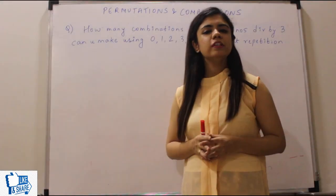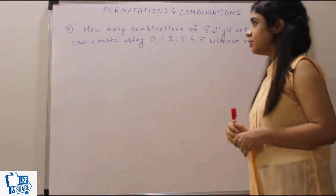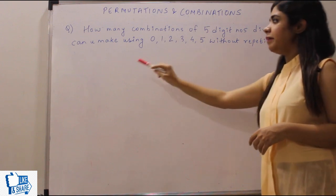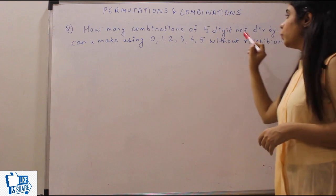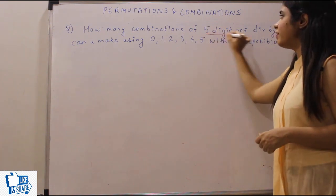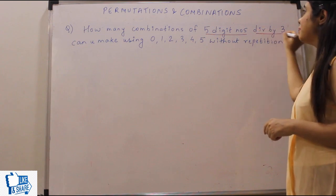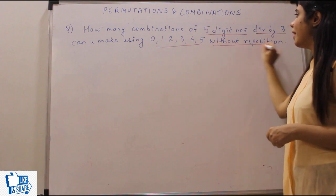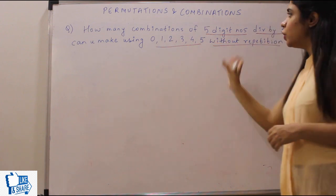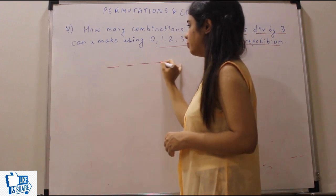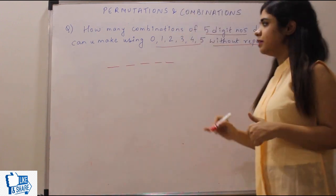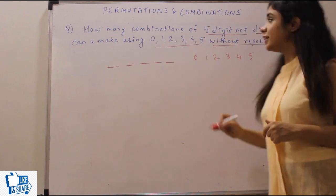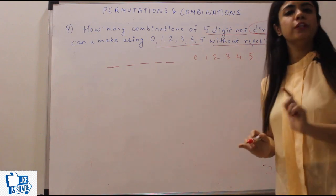Now let's look at the next question: How many combinations of five-digit numbers divisible by 3 can be made using the digits 0 to 5 without repetition? So we have to make five-digit numbers which are divisible by 3, using the numbers 0, 1, 2, 3, 4, 5 without repetition.